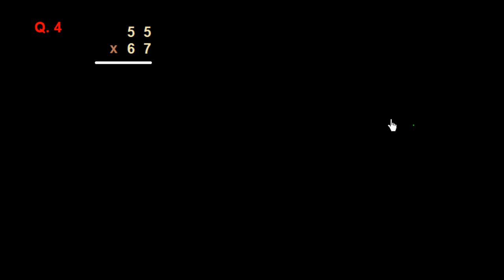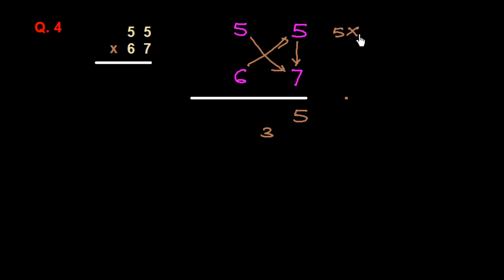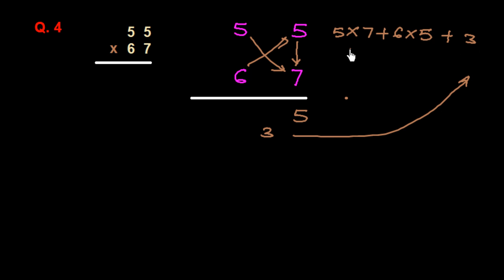Next example: we have to multiply 55 with 67. I write down 55 and 67 and draw a line. First we multiply the unit place vertically: 5 times 7 is 35. I write down 5 and carry 3. Then we do the crisscross multiplication of 5 with 7 and 6 with 5: 5 into 7 plus 6 into 5, plus the carried 3. We get 35 plus 30 plus 3, which is 68.